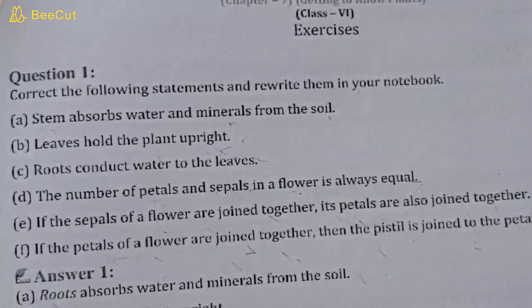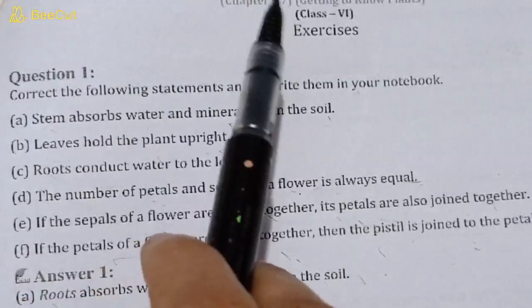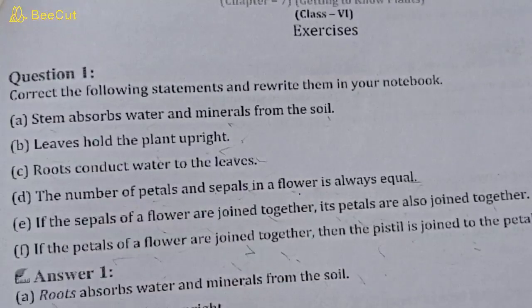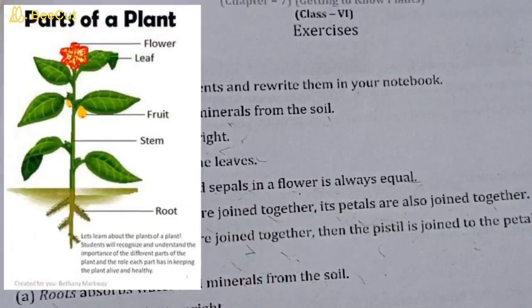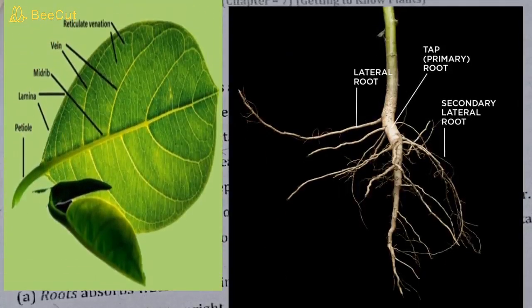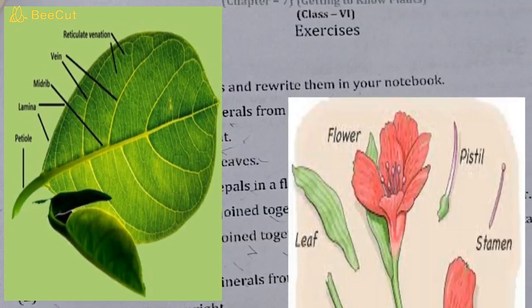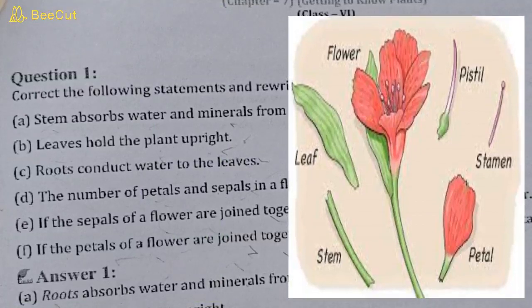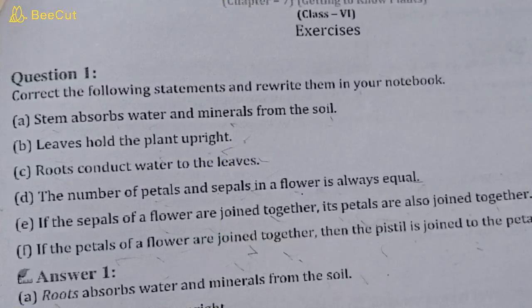Good morning children, today we are going to start chapter number seven and the name of the chapter is Getting to Know Plants. In this chapter we will learn about different types of plants, how their roots look, how their leaves look, the structure of leaves, the structure of flowers, and many things that we are going to study in this chapter.